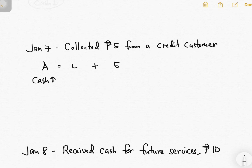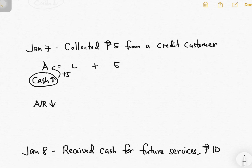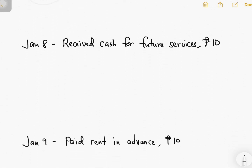Next: collected 5 pesos from a credit customer. Since you collected, cash increases automatically. That money came from a credit customer — a customer who owes you — and since that customer paid, you decrease your accounts receivable. Cash increases assets by 5 while accounts receivable decreases assets by 5, so plus 5 minus 5 equals zero — left side zero, right side zero: balanced.